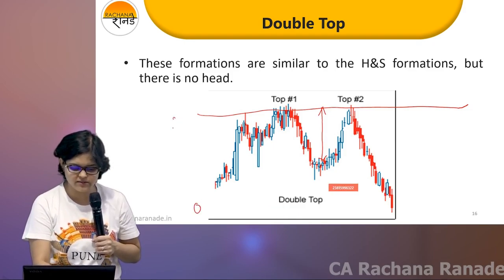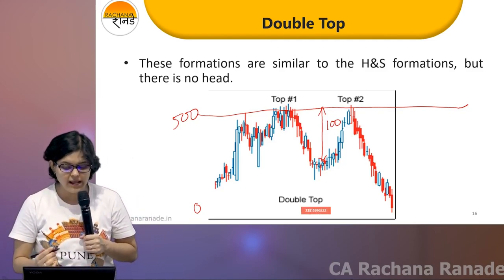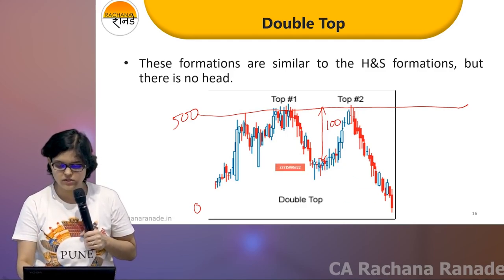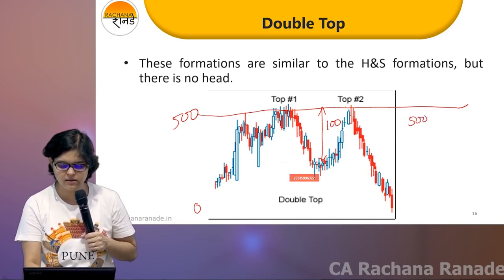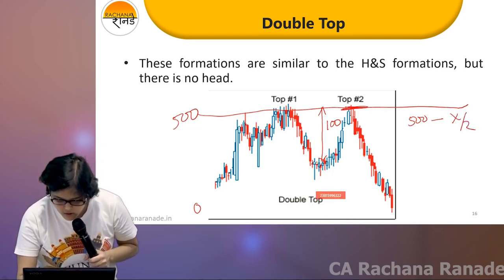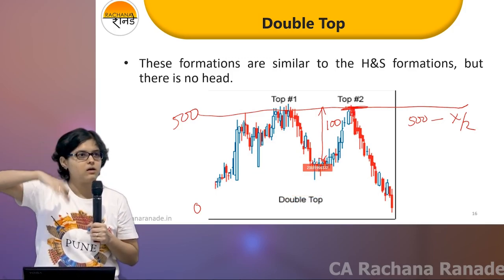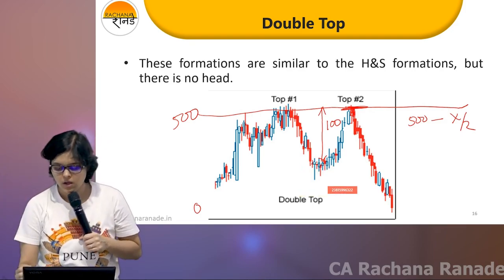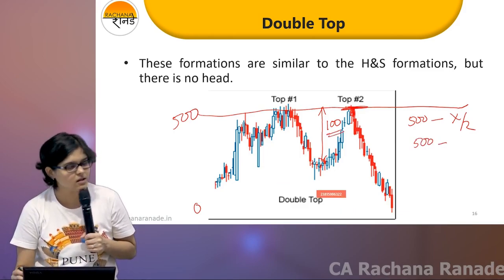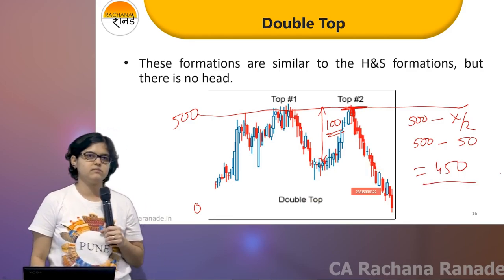Let us assume this is 0, this is 500, and this is 100. How will I calculate my price target? This will be 500, which is my neckline, minus x by 2. Where do I take a call? When I see a big red candle at the resistance, the case will be 500 minus x, which is 100, so it will be 50. My target will be 450.